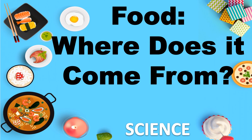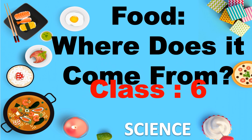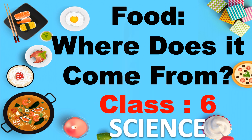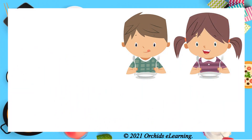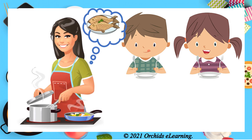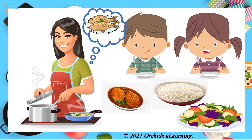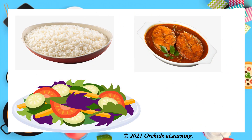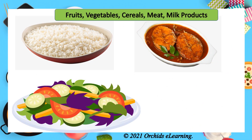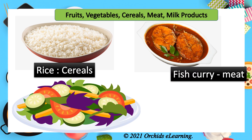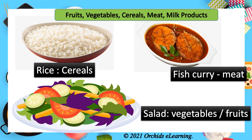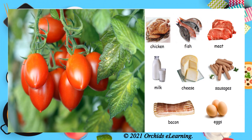Food: where does it come from? Class 6 Science. Look at Channu and Munnu. Their mother is making fish curry and rice. Channu and Munnu like to eat fish curry and rice with vegetable salad. Identify the food group each belongs to from the list given. Rice is cereals, fish curry belongs to the meat food group, and salad involves vegetables and fruits.